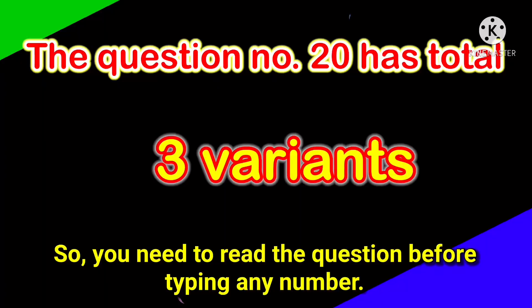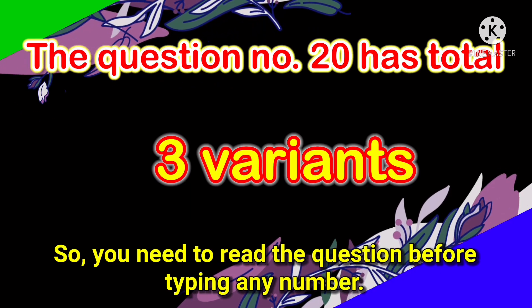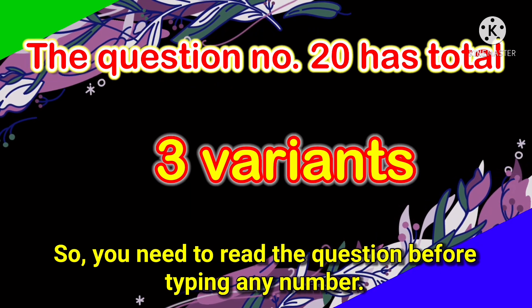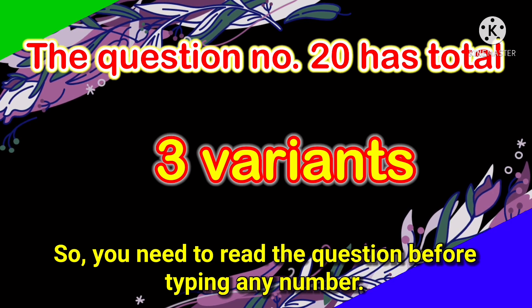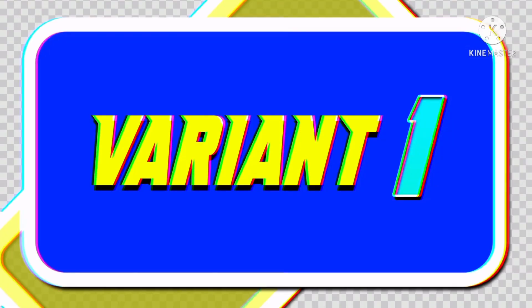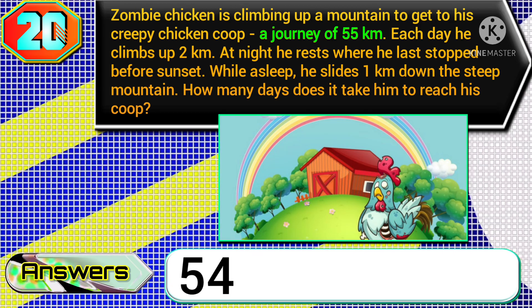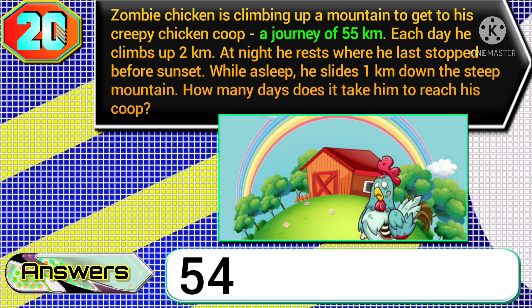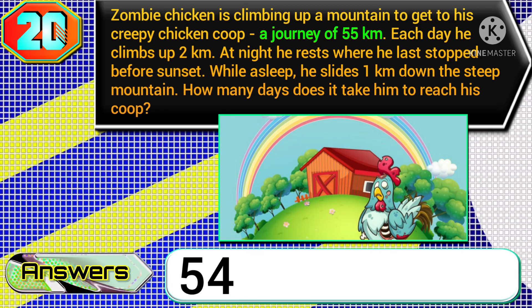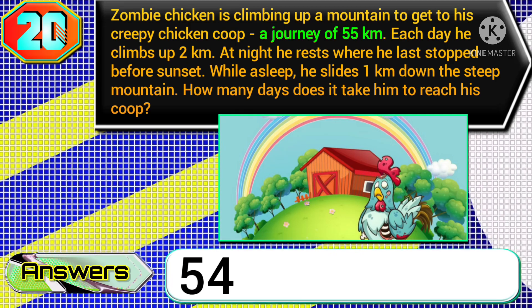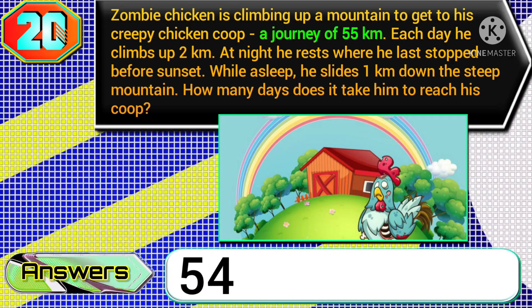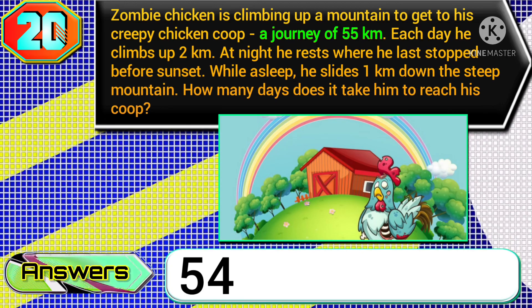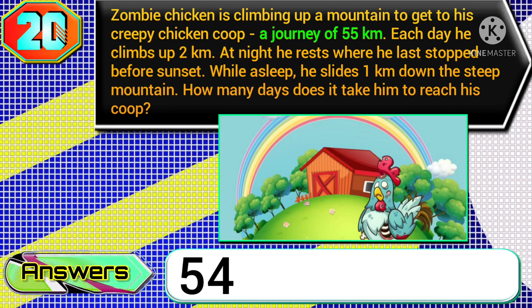Question number 20 has total three variants, so you need to read the question before typing any number. In variant one, if they ask you — just read this part of the question — 'a journey of 55 kilometers,' then you need to type the answer 54.